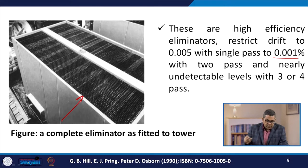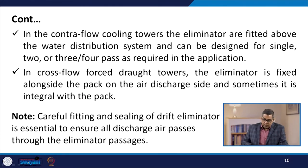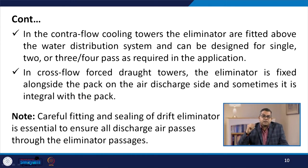This photograph shows a complete eliminator as fitted to a tower. In contra-flow cooling towers, the eliminators are fitted above the water distribution system and can be designed for single, 2, 3, or 4 pass as per the requirement of the application. In cross-flow forced draught towers, the eliminator is fixed alongside the pack on the air discharge side, sometimes integral with the pack. One must be very careful about the fitting and sealing of the drift eliminator to ensure that all discharge air passes through the eliminator passage.